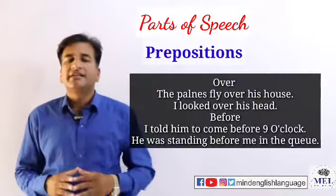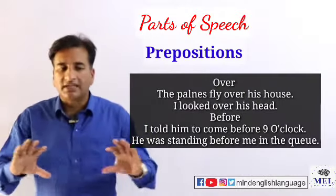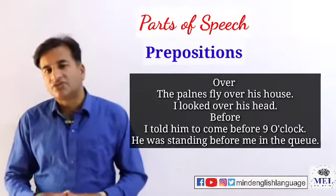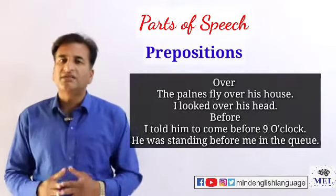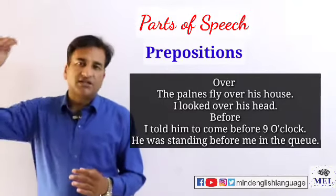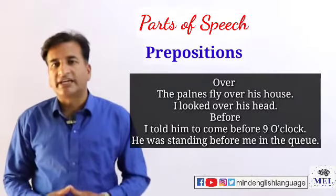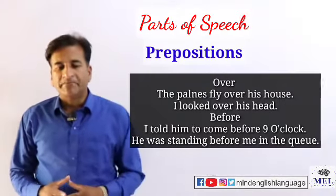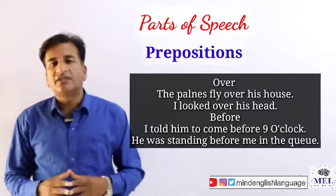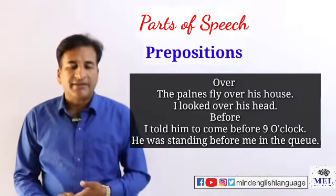اب ہم دیکھتے ہیں 'over' جو ہے یہ preposition of place کے طور پر کیسے use ہوتا ہے۔ 'The planes fly over his house' — اگر اس کا گھر airport کے قریب ہے تو جہاز اس کے گھر کے اوپر سے اڑتے ہیں۔ دوسری example: 'I looked over his head' — میں نے اس کے سر کے اوپر سے دیکھا۔